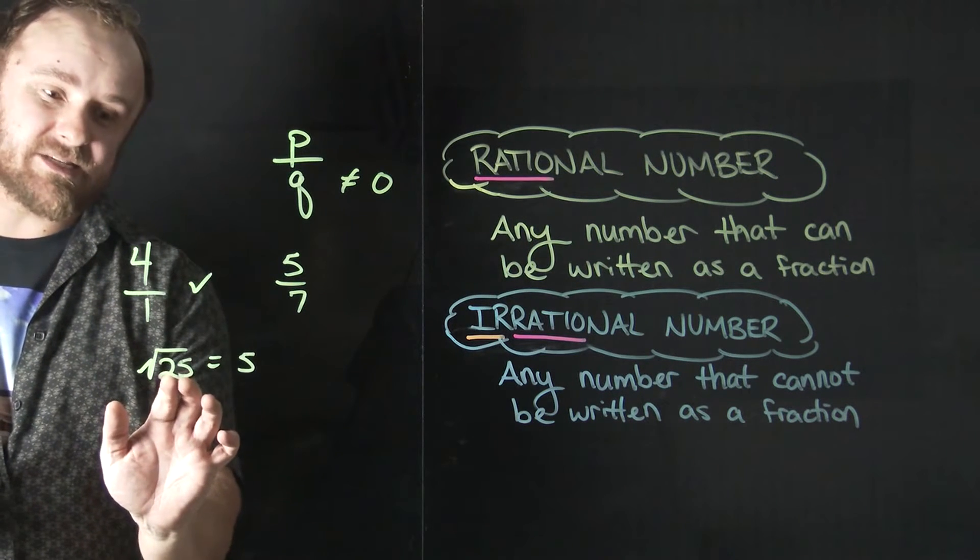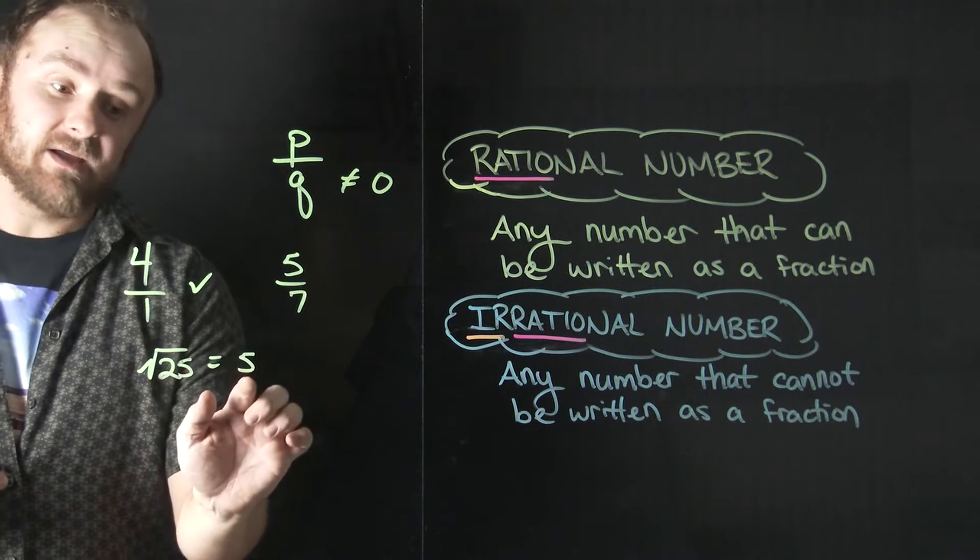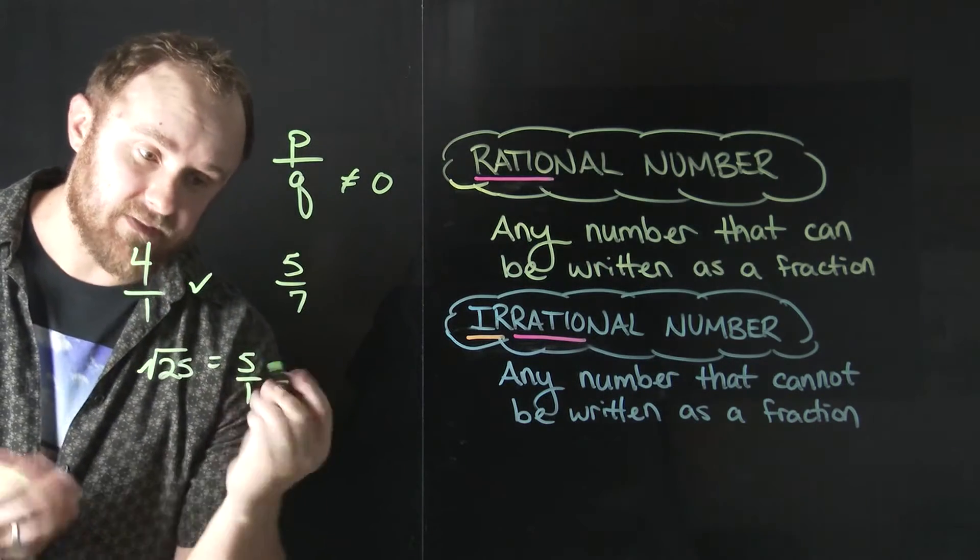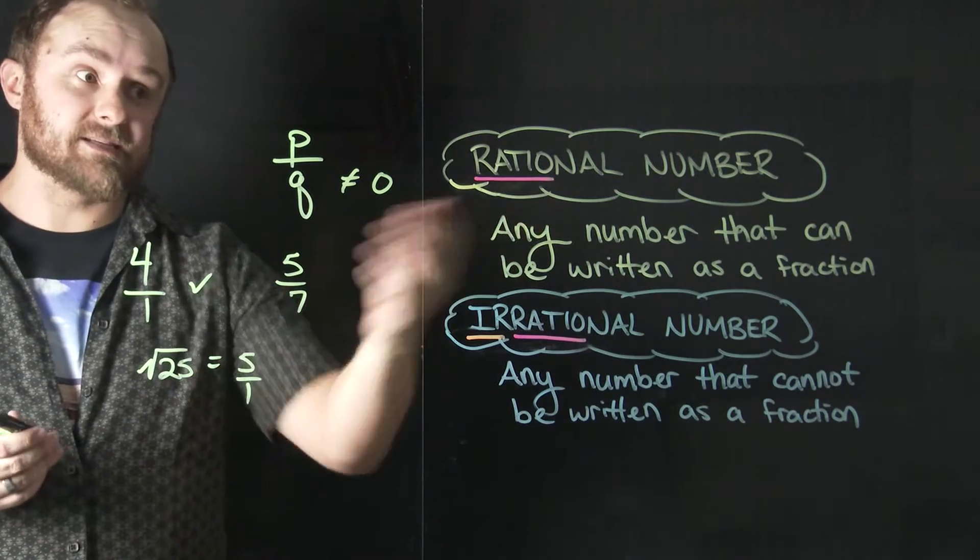So even though we don't really necessarily think of this being the exact same as this, they really are. So the square root of 25 is really just five. And just like our last whole number, I can put a one underneath this and turn that into a fraction. So perfect squares are also categorized as rational numbers.